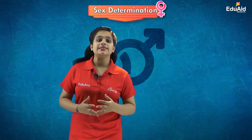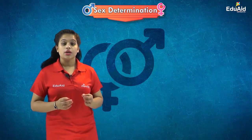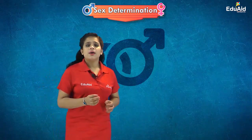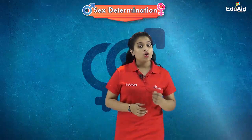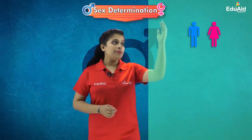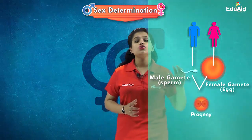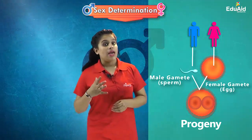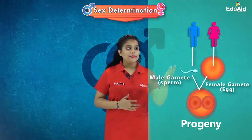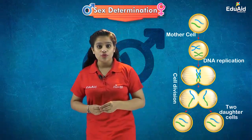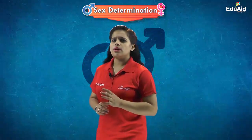Hello students, welcome to Eduate. In this session we learn how — or what determines the sex of a baby. By now we know how traits get transferred, and we also know that both the male and the female gametes fuse to form the progeny, and that the gametes are formed by the division of chromosomes.